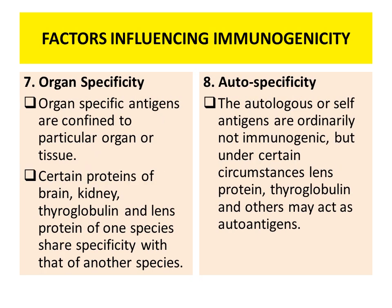Then is organ specificity. Organ-specific antigens are confined to particular organs of the tissue. For example, certain proteins of the brain, kidney, thyroglobulin, and lens proteins of one species share specificity with another species. Next is autospecificity. Autologous or self-antigens are ordinarily not immunogenic, but under certain circumstances, for example lens proteins, thyroglobulin and others may act as auto-antigens.